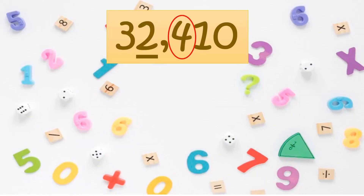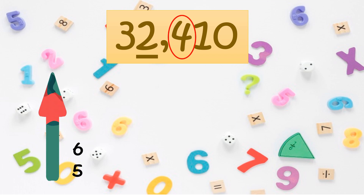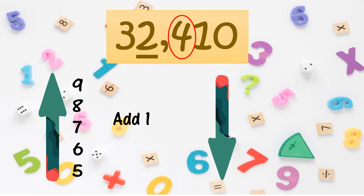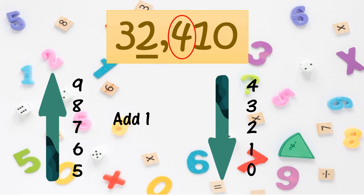Ibig sabihin, kung ang katabi ng underline digit ay kabilang sa 5, 6, 7, 8, or 9, we need to add 1 to the underline digit. Kung ang katabi naman ng underline digit ay kabilang sa 0, 1, 2, 3, or 4, we need to stay — hindi natin gagalawin ang underline digit.